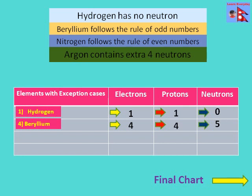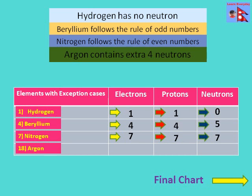In nitrogen: 7 electrons, 7 protons, and 7 neutrons — it follows the rule of even numbers, itself being odd. Finally, argon has an extra 4 neutrons, resulting in 22 neutrons. Let's summarize all of these in the final chart.